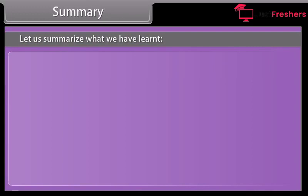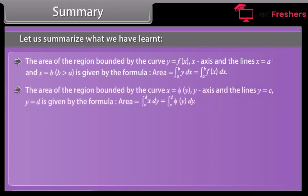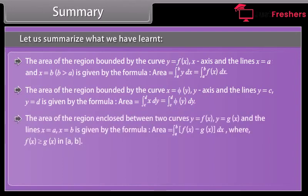Summary: The area of the region bounded by the curve y = f(x), the x-axis, and the lines x = A and x = B (where B > A) is given by: Area = ∫ from A to B of y dx = ∫ from A to B of f(x) dx. The area of the region bounded by the curve x = f(y), the y-axis, and the lines y = C and y = D is given by: Area = ∫ from C to D of x dy = ∫ from C to D of f(y) dy. The area of the region enclosed between two curves y = f(x) and y = g(x), and the lines x = A and x = B, is given by the formula below.